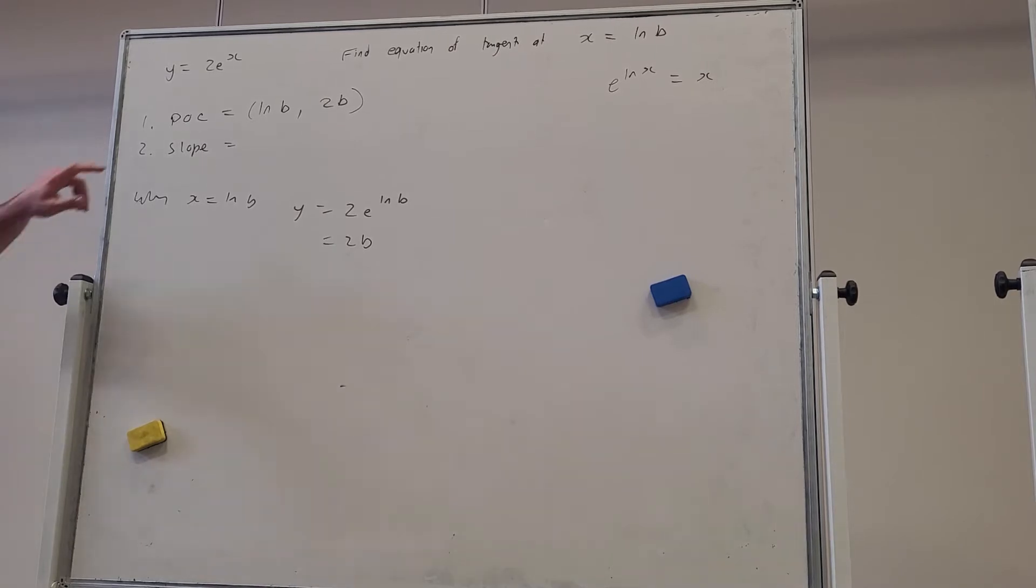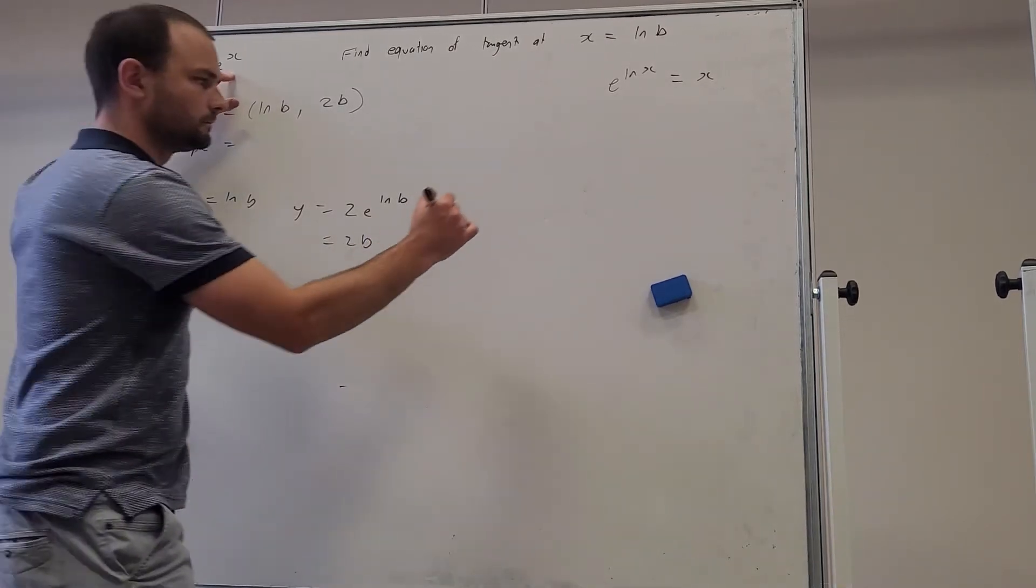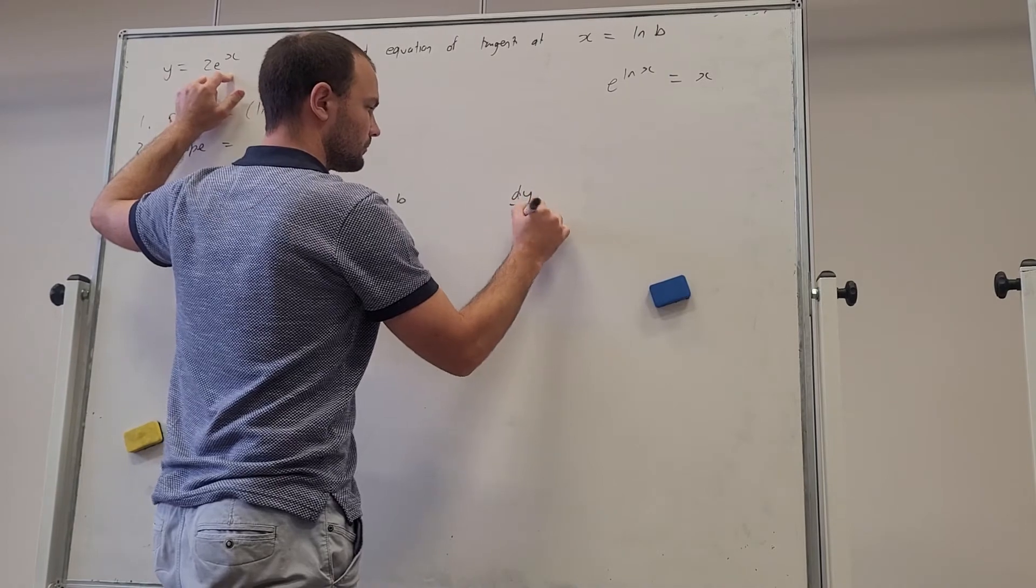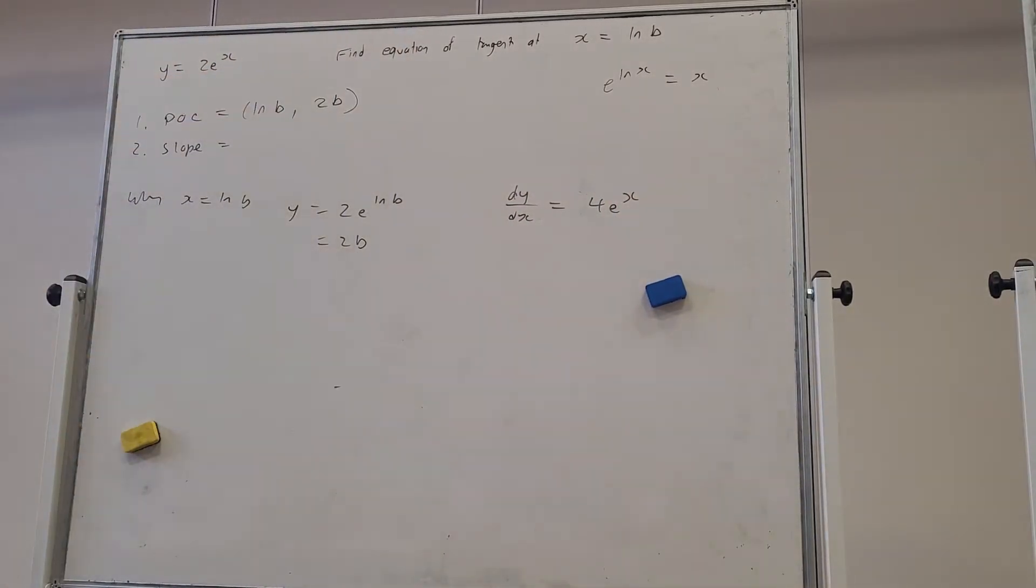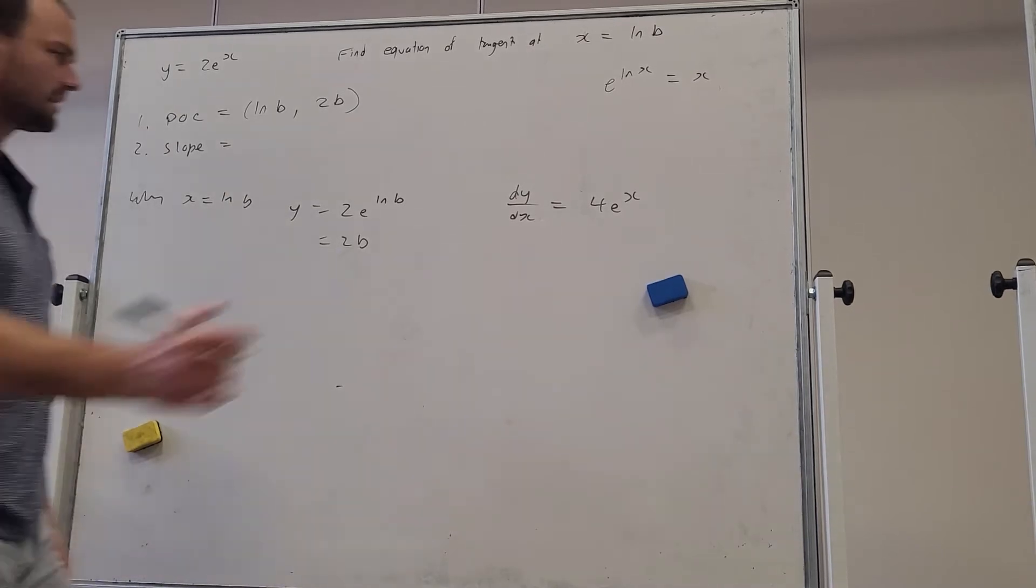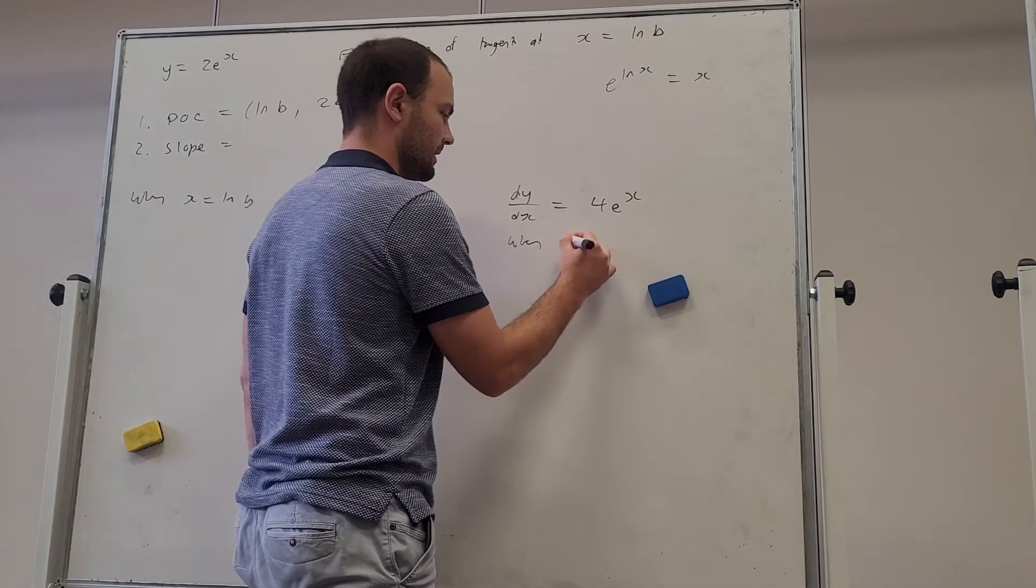Then we need to find the slope. Now in order to find the slope we need to find the derivative. So dy/dx will be 4e^x. And when x is ln b, we're talking about the same x value.